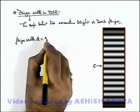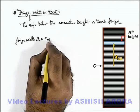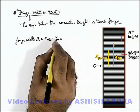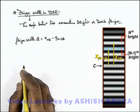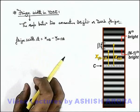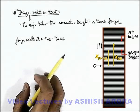And this is given as the distance of nth bright fringe from center minus distance of (n-1)th bright fringe from center. So this will be the fringe width.